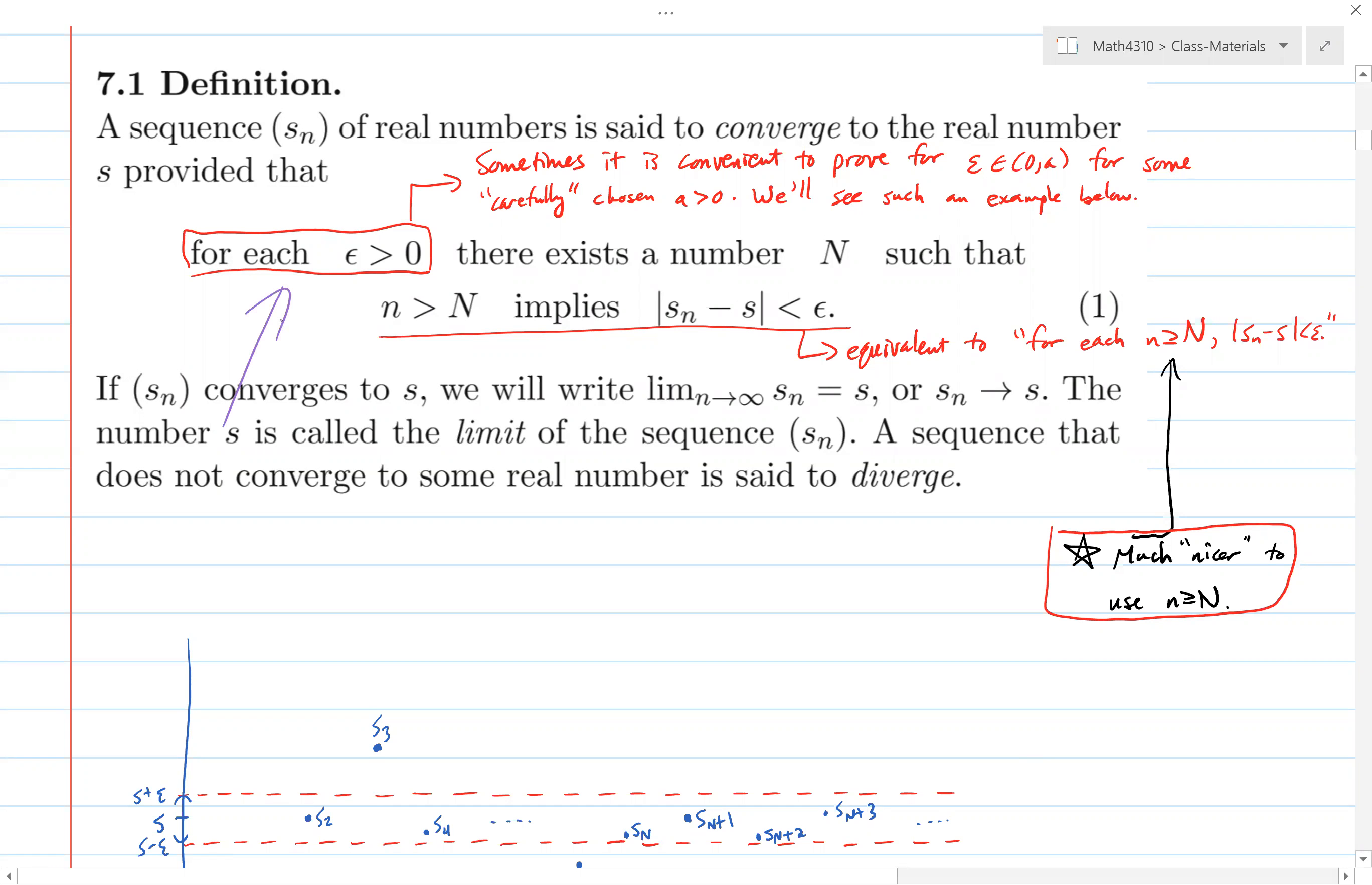A big point of emphasis is that the capital N can depend on epsilon. We see this in figures because capital N determines how far out in the sequence you might have to go until all the terms in the sequence starting at that point or beyond are within an epsilon distance of the s value. These were kind of the really big main points that we were making in the first lecture.